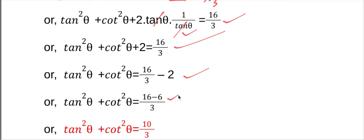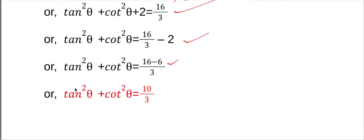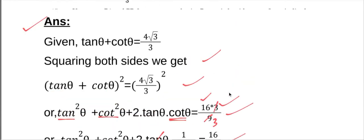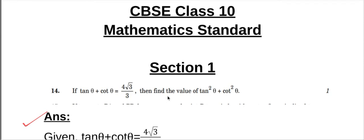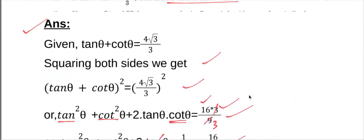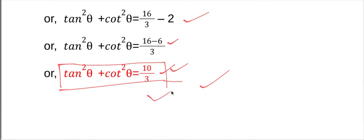So tan²θ plus cot²θ equals 16 minus 6 equals 10, over 3. Therefore the value of tan²θ plus cot²θ is equal to 10/3.